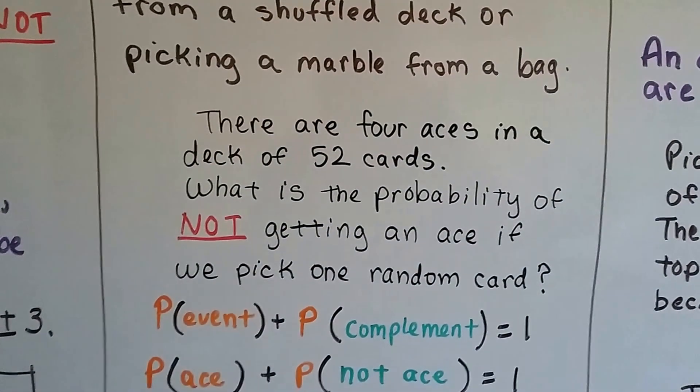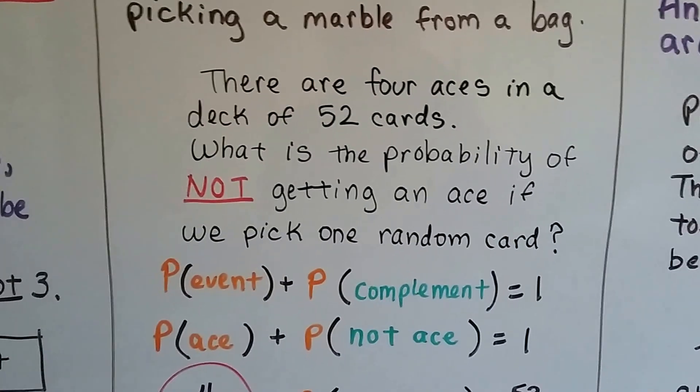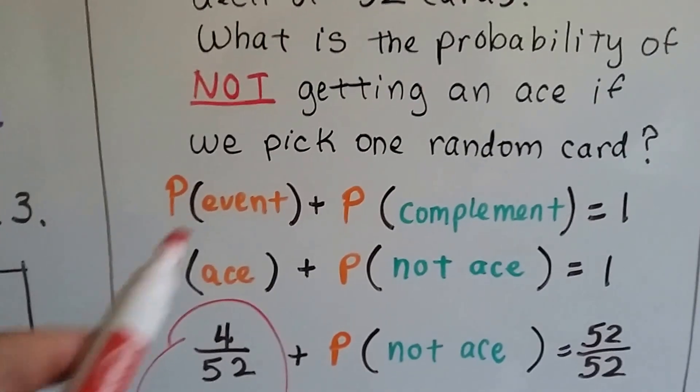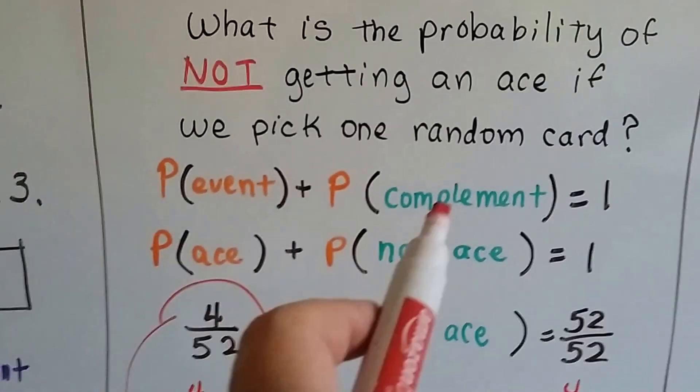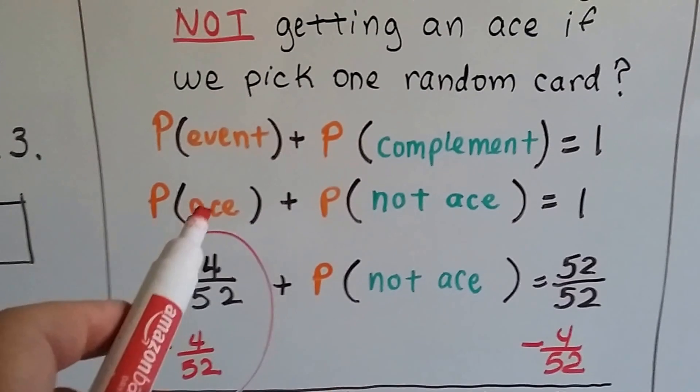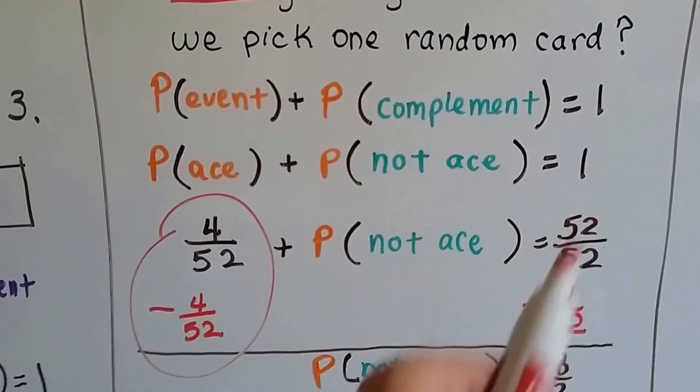There are four aces in a deck of 52 cards. What's the probability of not getting an ace if we pick one random card? The probability of an event plus the probability of its complement—of it not happening—is 1.